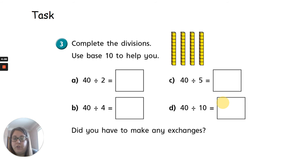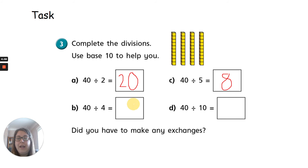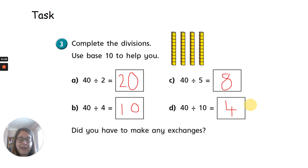So let's have a look at these divisions. Looking at it as a division, how can we work out the answers to these questions? Pause the video and have a go. 40 divided by two is 20 — we can do that. 40 divided by five is eight. 40 divided by four? Yes, we can do that — it's 10. And 40 divided by 10 is four. We didn't have to make any exchanges that time, because there wasn't any left and everything was okay.